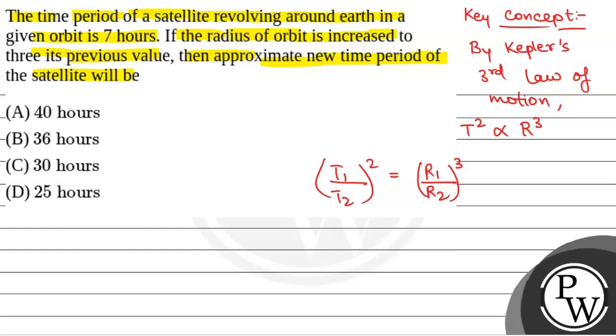So, T2 squared that will be equal to R2 by R1 cubed into T1 squared. Now, we have been given that T1 is equal to 7 hours and R1 is equal to R. Now, we have to find T2 when R2 is equal to 3R.